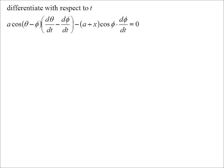Now if I use the sine rule in that triangle, I get a over sin φ is (a + x) over sin(θ - φ). I should be able to play around with that and get the expression that they want. So cross multiply, bring everything to one side, and we have our expression. We now have to find dφ/dt. So I'm just going to differentiate with respect to t.